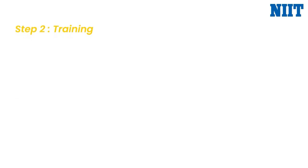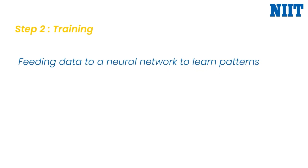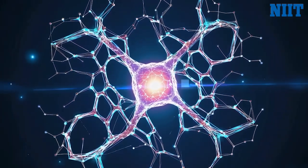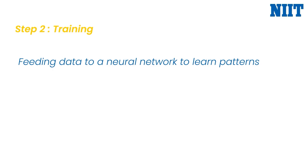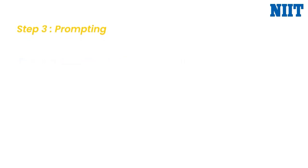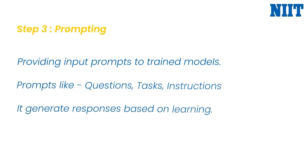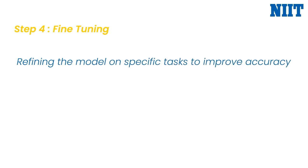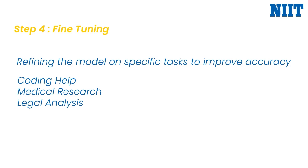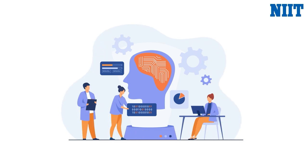Step 2: Training. The data is fed into a neural network — basically a brain-like system — which learns patterns in how language works, and this is where the model starts forming its knowledge. Step 3: Prompting. Once the model is trained, we give it prompts like questions, tasks, or instructions, and it generates responses based on what it has learned. And finally, fine-tuning — this is where we refine the model for specific tasks like coding help, medical research, or legal analysis, so it performs even better in those areas. A mix of data, learning, and tuning — that's how LLMs get so good at what they do.